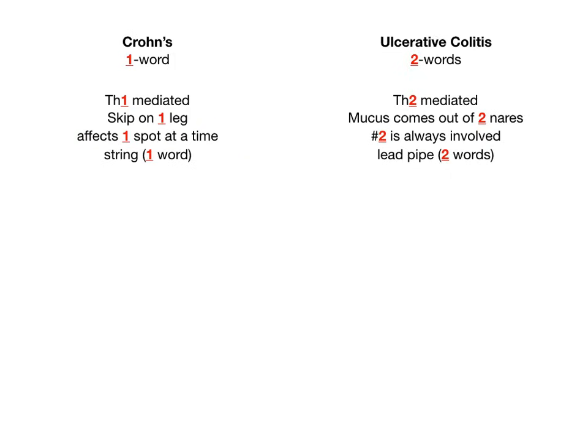More mnemonic details: Crohn's affects one spot at a time — skip, one spot, skip — hence cobblestoning and creeping fat. Crohn's has the string sign, and 'string' is one word, just like Crohn's. In ulcerative colitis, the rectum is always involved — number two is always involved, because when you poop you take a number two. Lead pipe is two words, two words for ulcerative colitis. This mnemonic is simple but effective. If you approach this from the perspective of understanding transmural versus mucosal and submucosal inflammation, everything else flows from there and you will crush these questions on your exam.